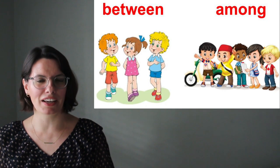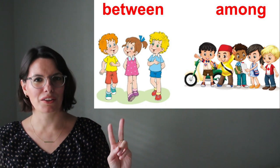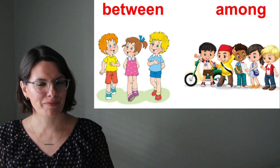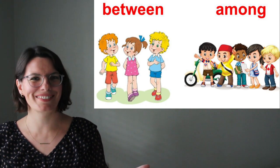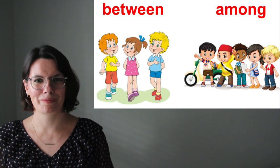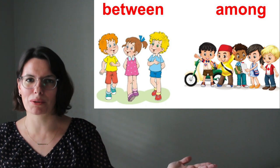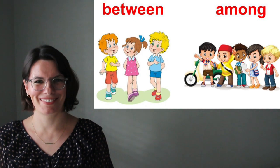We can also use between and among when we talk about the position of a person. There is a girl between the two boys. There are two boys and the girl is between the boys. Where is the girl? Is the girl between the two boys? There are four boys and the girl is among the boys. Is the girl among the boys?